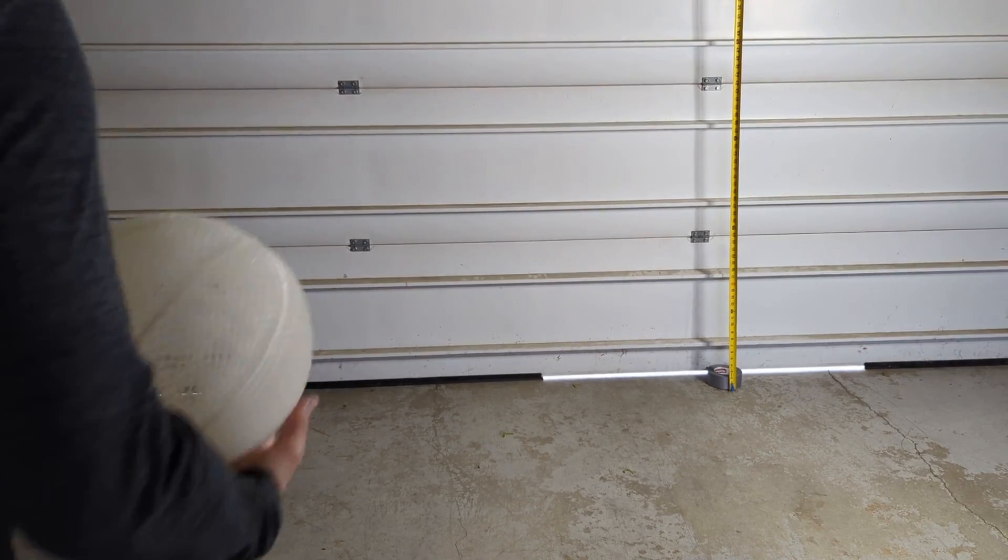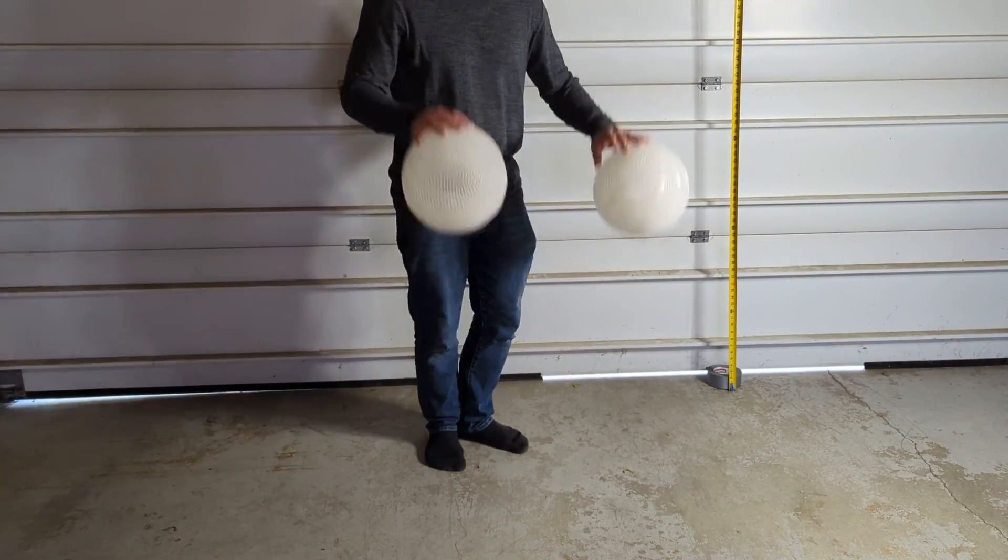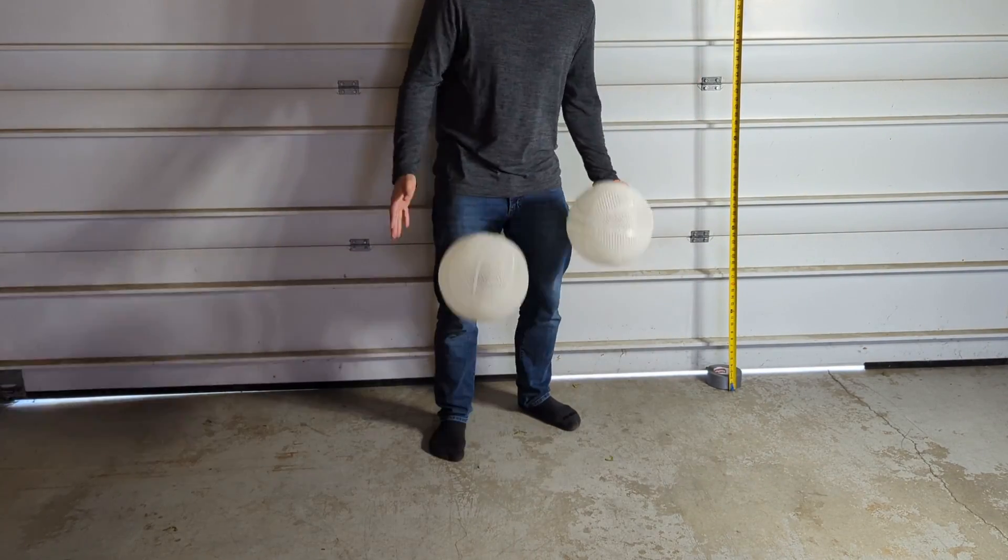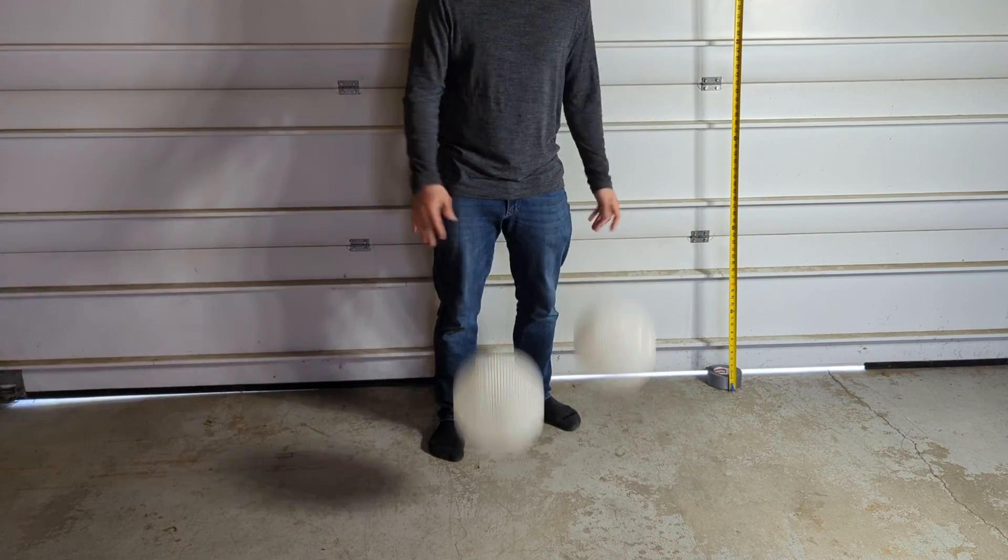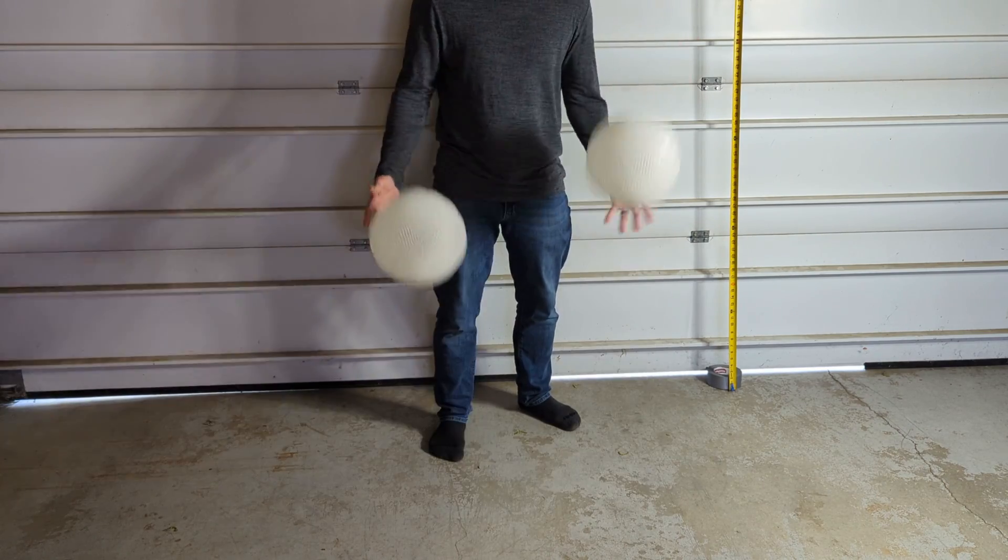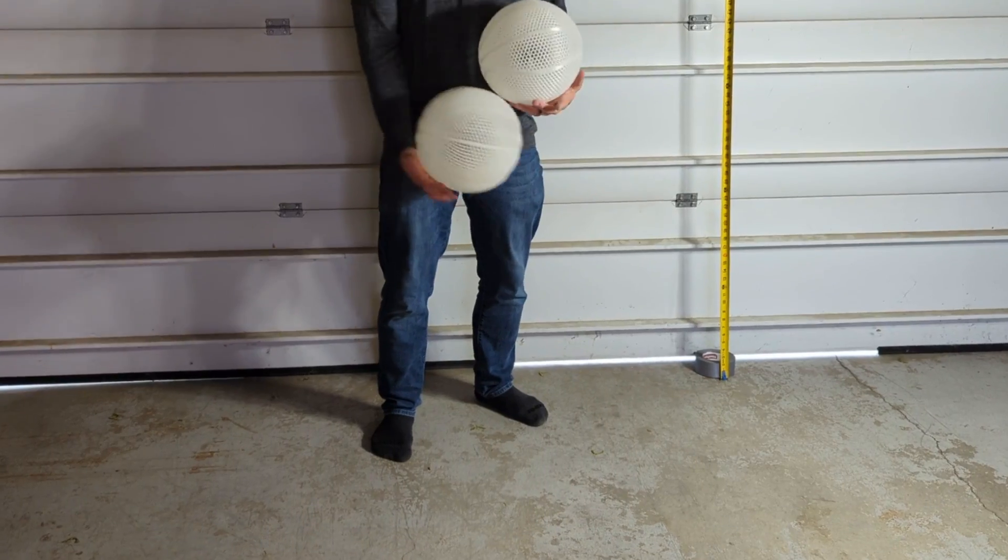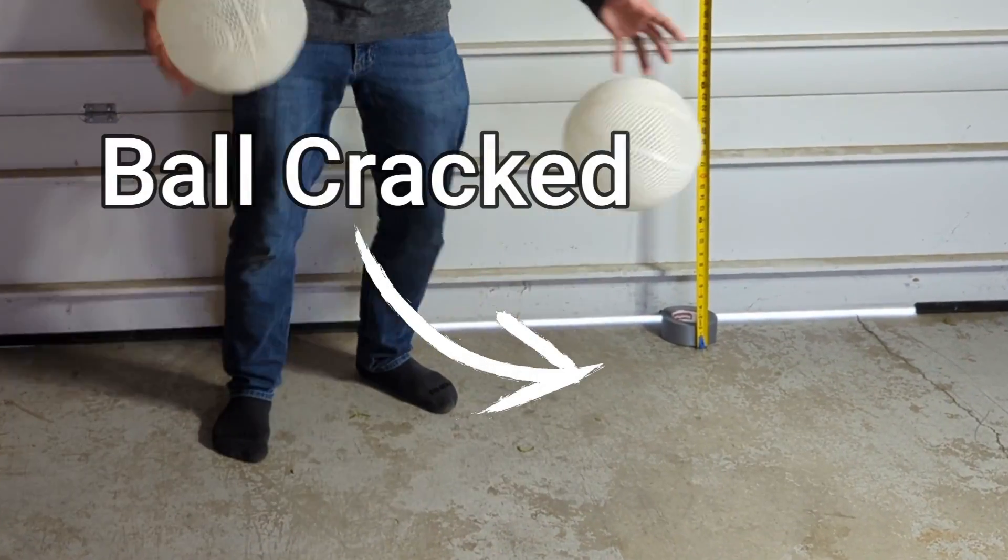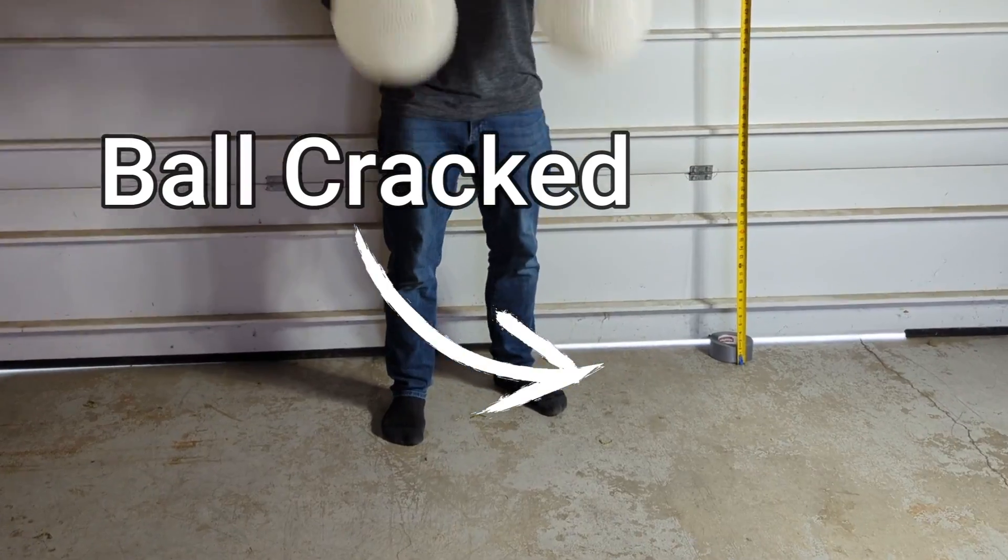Before I took the basketballs out to an actual basketball court, I was just going to dribble the balls next to each other and have them both go through a 500 bounce durability test. But as I was dribbling both of the balls next to each other, the double lattice ball just randomly cracked, which is unfortunate.